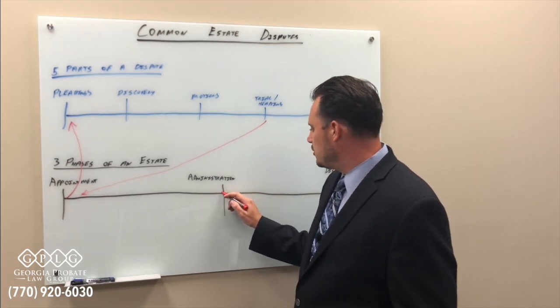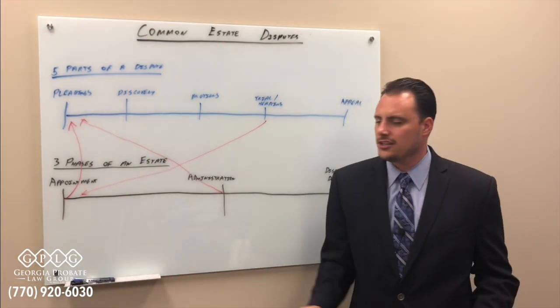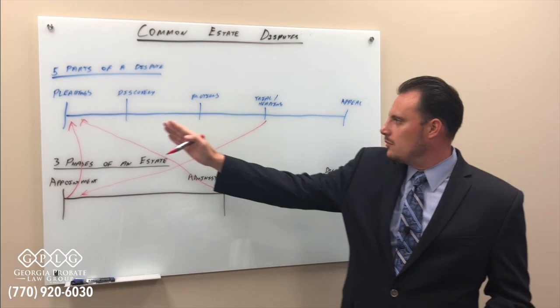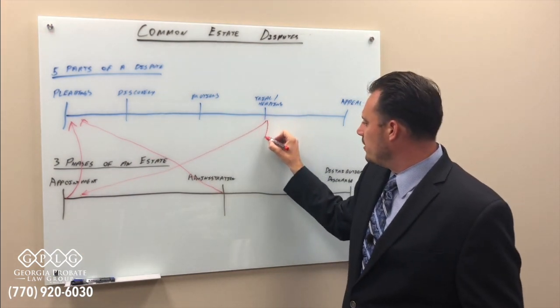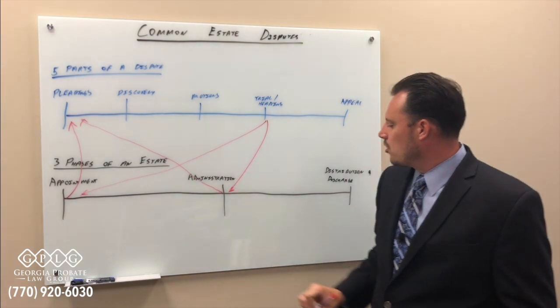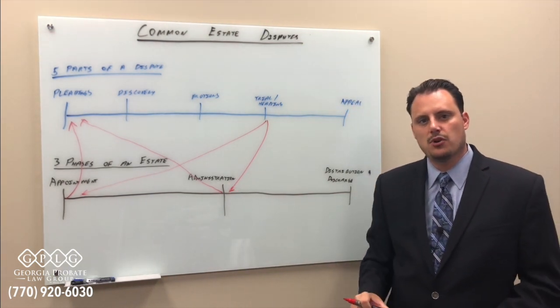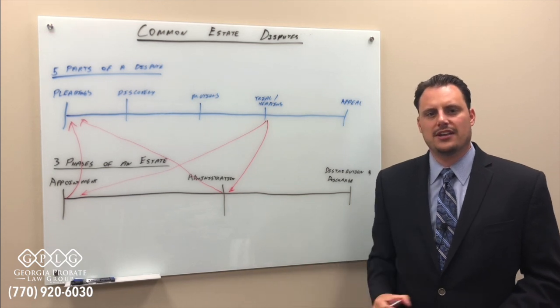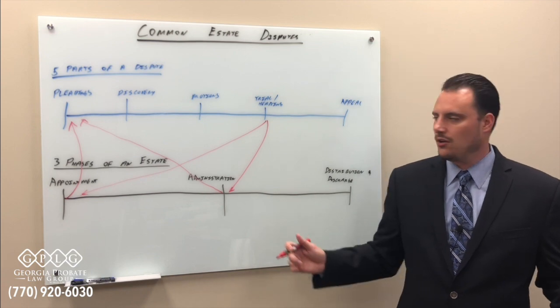Those are the allegations made and we would go up here to the pleadings part of a dispute and that would set off discovery motions. We'd go to a trial or a hearing. The court would render its decision and the court would either say, yes, I agree. I think this executor should be removed or no, I don't agree. I'm going to give this executor another chance. And executor, you need to follow these guidelines. Now,